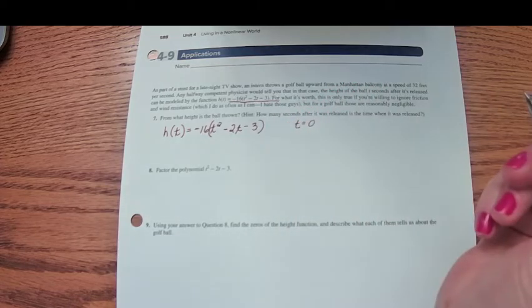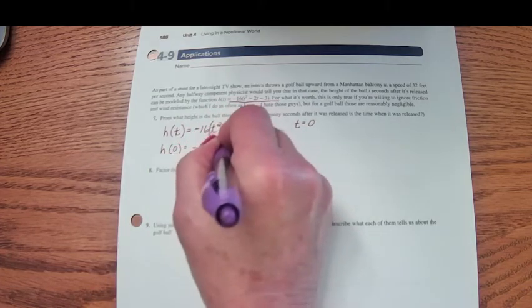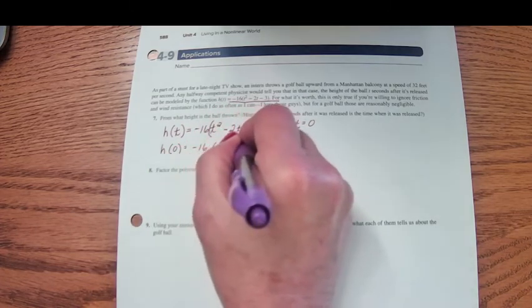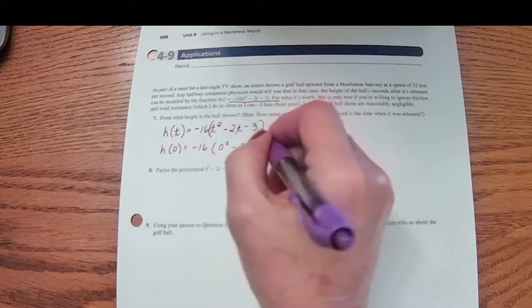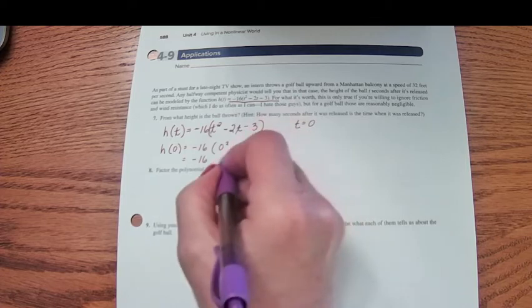Okay, so that means when time is zero, it hasn't been any time since it's been thrown. At the exact moment it's thrown, the height when t is zero is negative 16 times 0 squared minus 2 times 0 minus 3, which is negative 16.